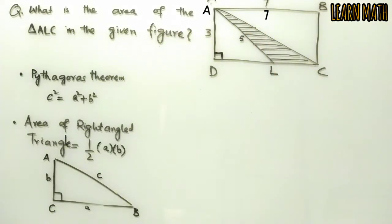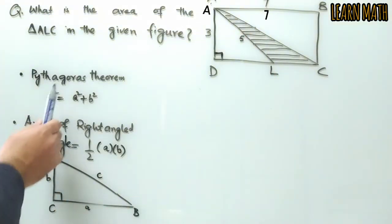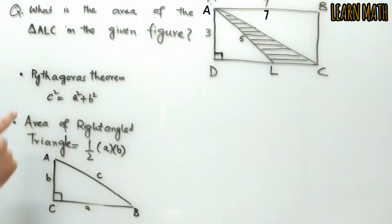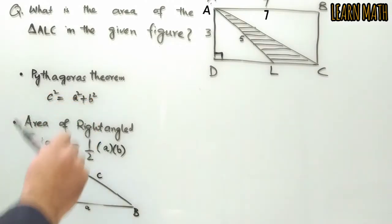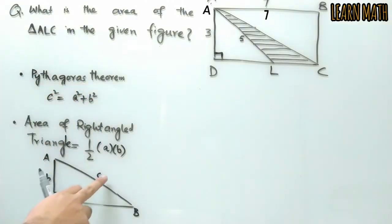Before starting the question, we need to know two things. One is Pythagoras theorem, the second is area of right angle triangle. Pythagoras theorem is: c² = a² + b². The area of a right angle triangle is equal to 1/2 × a × b.